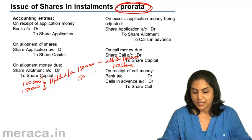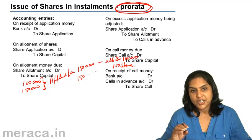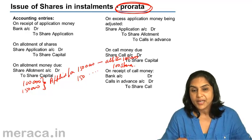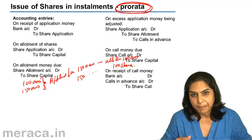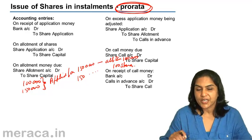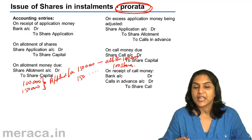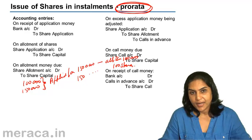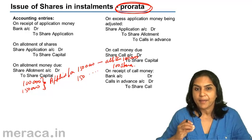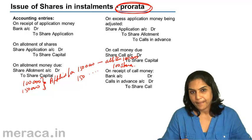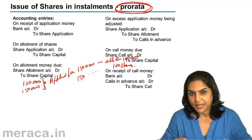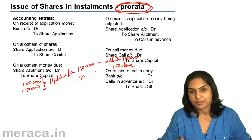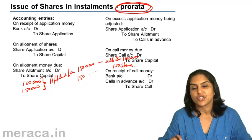On the shares that you are not allotted, the application money that you have paid can be refunded by the company. Usually when shares are allotted, on the same date, allotment money also becomes due. So the company, instead of refunding the extra application money and then asking you to pay the allotment money, may adjust the extra application money towards the allotment money which is due from you.